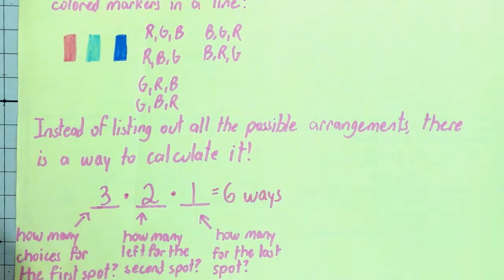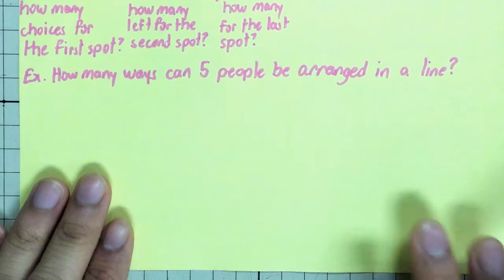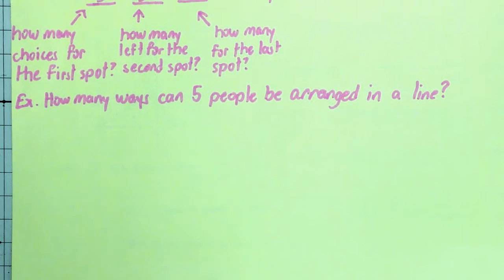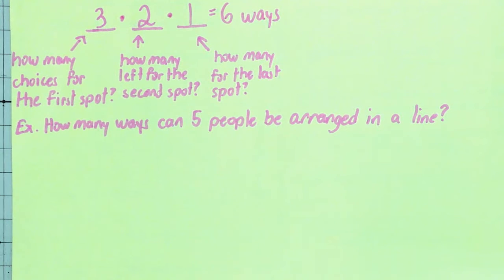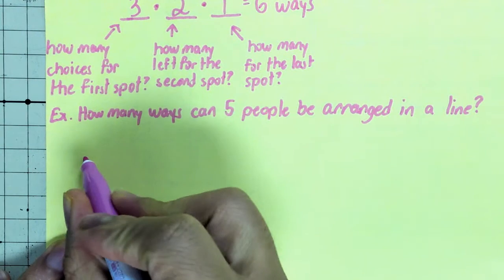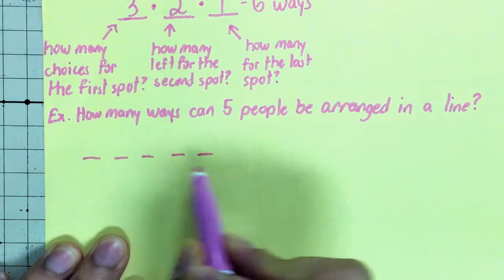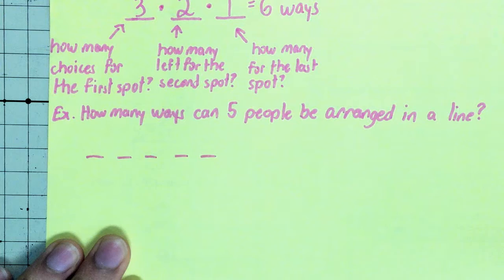And there's your six up here. So now let's take a look at this next example. How many ways can five people be arranged in a line? So you can do this two ways. We have in the line one, two, three, four, five. First person here, last person there. So there's five different spots.